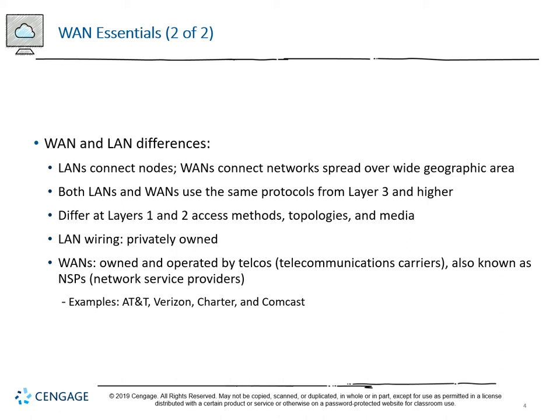LANs and WANs both use the same protocols from layer 3 and up, but at layers 1 and 2 we vary slightly in terms of access methods, topology arrangements, and media usage. Fiber optic connections between WANs are pretty common, whereas LAN wiring is often privately owned. WANs are traditionally owned and operated by telcos, telecommunication carriers, also called NSPs - network service providers. When we think of an ISP, we're thinking about an internet service provider for an individual or company.